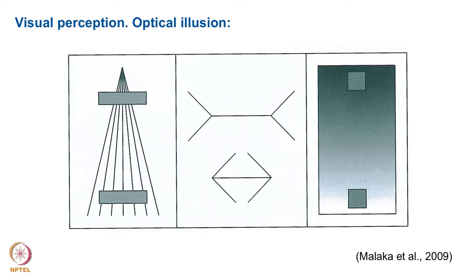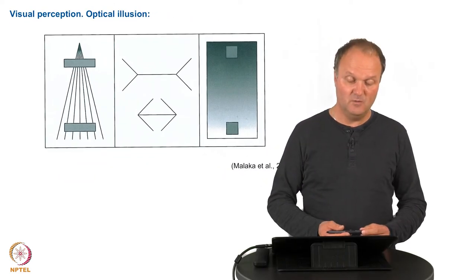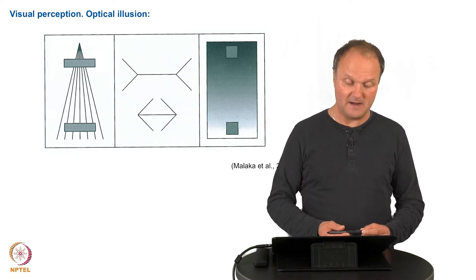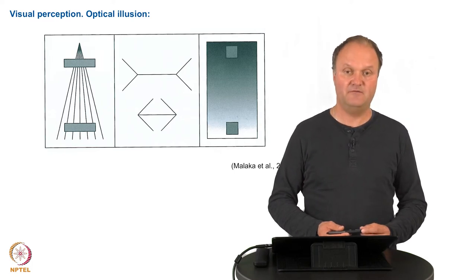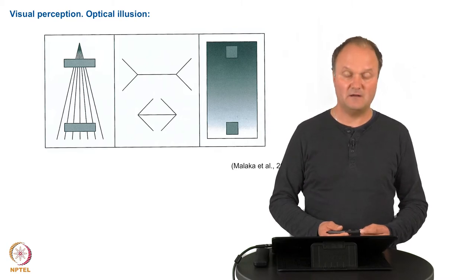And it also applies to color. For example, in the right panel you think that the lower square would be a little bit darker than the upper square but this actually only comes from the surrounding gray shading. So these are optical illusions which are produced by the eye and some of them have an origin in the different sensitivities as we have explained when we explained the ganglion cells.